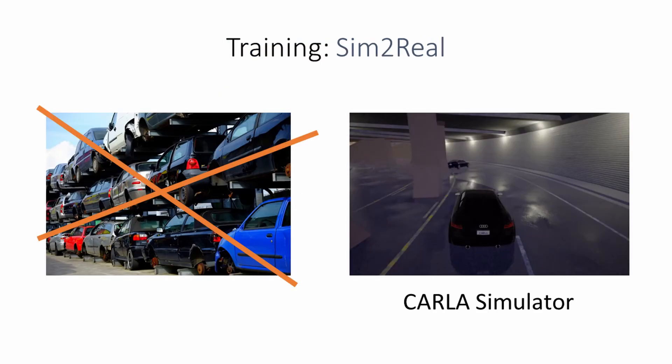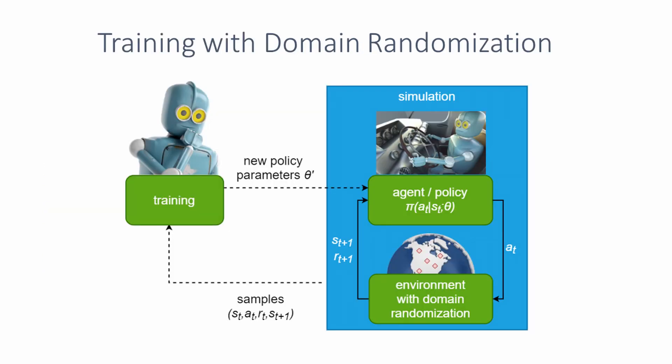As it would be infeasible to train high-speed collision avoidance in real life, the training is done in simulation. Here, the well-known open-source CARLA simulator is used. This opens the challenging question of transferring behavior — policies learned in simulation — to the real world.